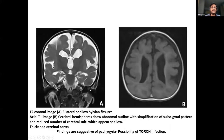A T2 coronal image shows bilateral shallow sylvian fissures, and an axial T1 image shows cerebral hemispheres with an abnormal outline, simplification of the sulcogyral pattern, reduced number of cerebral sulci appearing shallow, and thickened cerebral cortex — findings consistent with pachygyria.